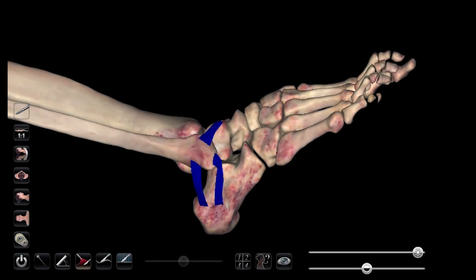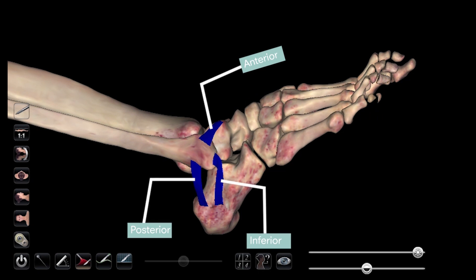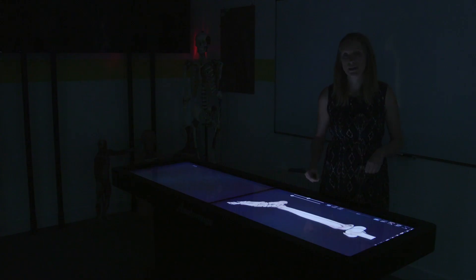We've got some ligaments on this lateral aspect of the leg and the foot, so the outside of your leg and foot. And we've got these three ligaments shown here. So this anterior one, posterior one, and inferior one. Now these are the ligaments that are really weak in comparison to the medial side.